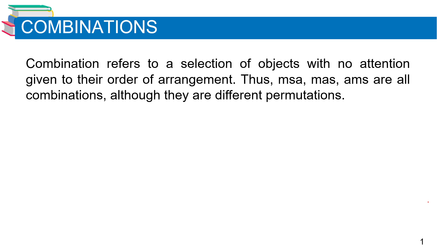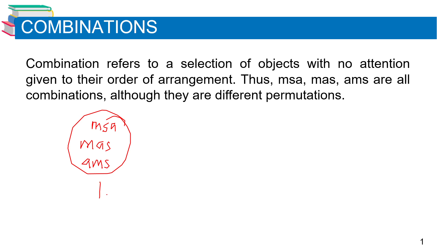For example, MSA, MAS, and AMS are all combinations. Although they are different permutations, in combination we count them as one. But in permutation we have three countings. So therefore, combinations are without regard to order.